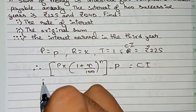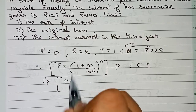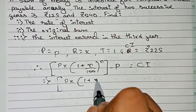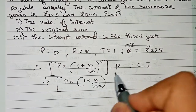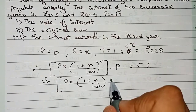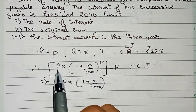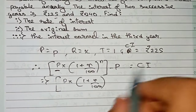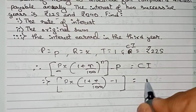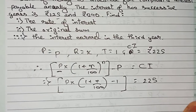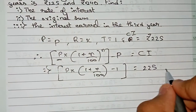Putting in the values: P into (1 + r/100) to the power 1, minus P — taking P as common it becomes P into (1 + r/100 − 1) — is equal to the CI, that is ₹225. This is equation 1.